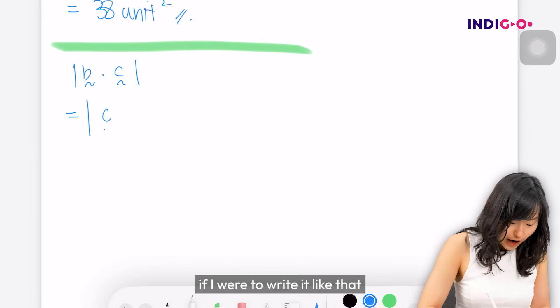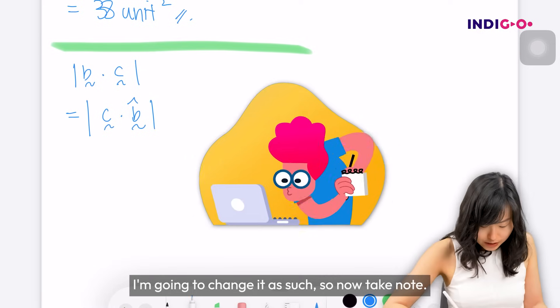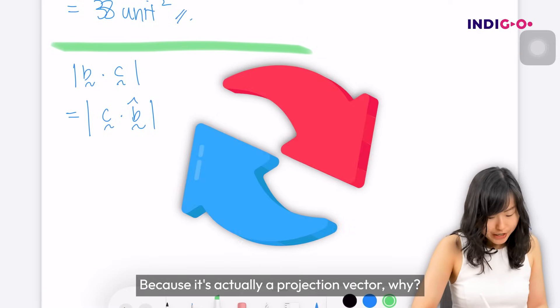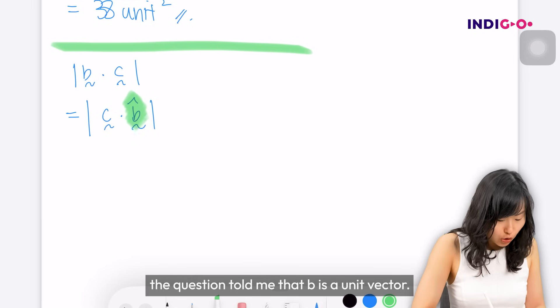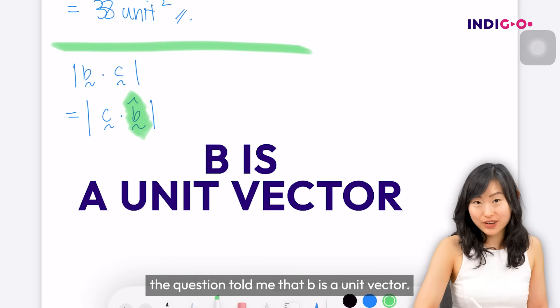So if it's a unit vector, if I were to write it like that, I'm going to change it as such. So now take note, why do I flip it? Because it's actually a projection vector. Why? Because remember the question told me that b is a unit vector.